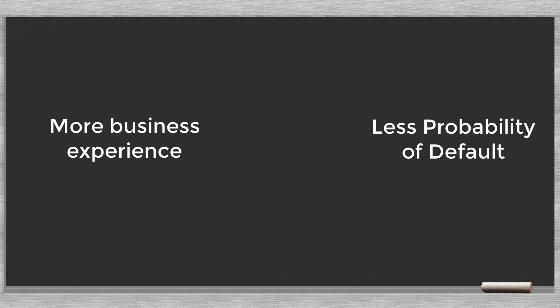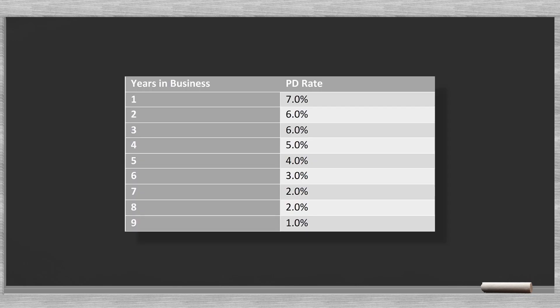In our bank or microfinance institution we know from experience that there is a relationship between the number of years a client has run his business and the probability of default. The longer an entrepreneur is in business, the lower the default rate. From data from our historical loan portfolio we get the following probability of default data.